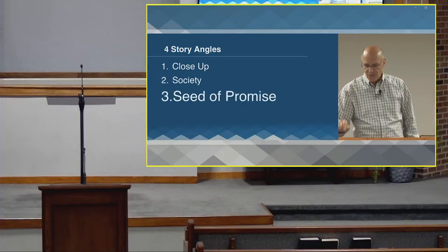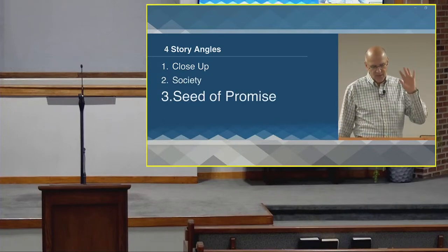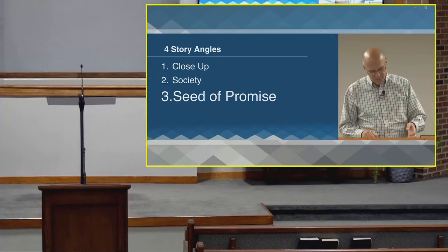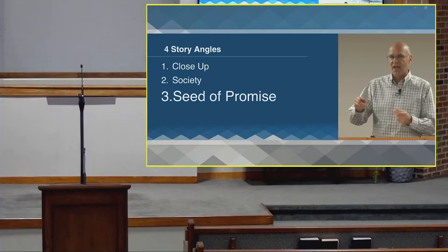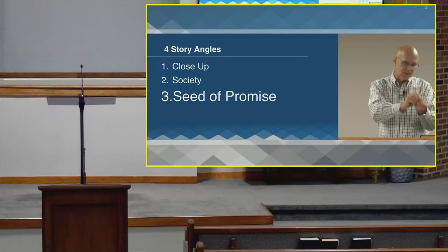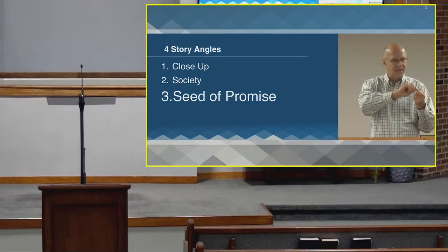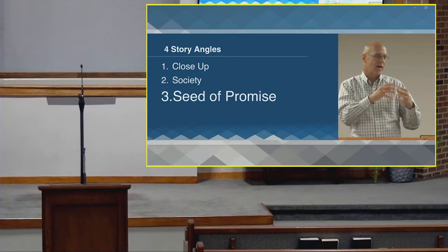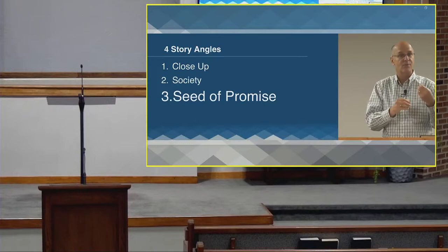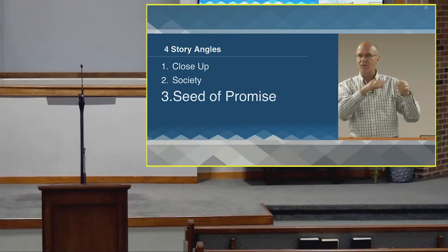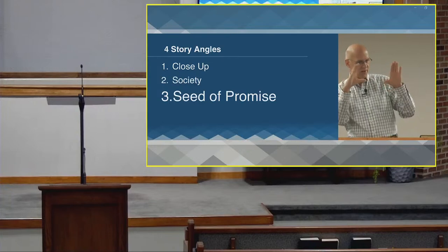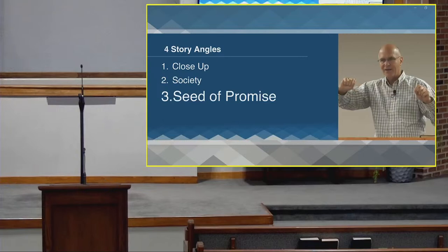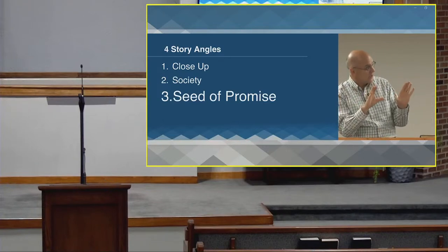Then the third angle is the idea of the seed of promise — the first mention and the tracking of God's promise of salvation. That's like a thread that runs from Genesis all the way to Revelation. In Genesis we refer to it as the seed of promise. Every once in a while, the story is being told and all of a sudden they switch over and focus on this seed of promise — how's that coming along?